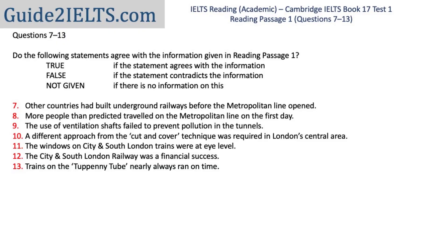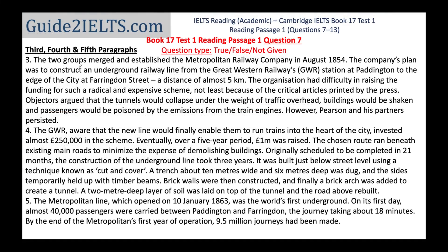Let's look at a few examples. We'll start with the seventh question, which has the capitalized word 'metropolitan.' I'll keep 'metropolitan line' in mind as a possible location key phrase, and also the word 'countries' — I could find 'country,' 'nation,' or names of countries in the passage. With this in mind, I start scanning the passage. Because 'metropolitan' is capitalized, it's easy to find. It appears for the first time in the third paragraph as the name of a company, Metropolitan Railway Company, and the phrase 'metropolitan line' is mentioned for the first time at the beginning of the fifth paragraph.